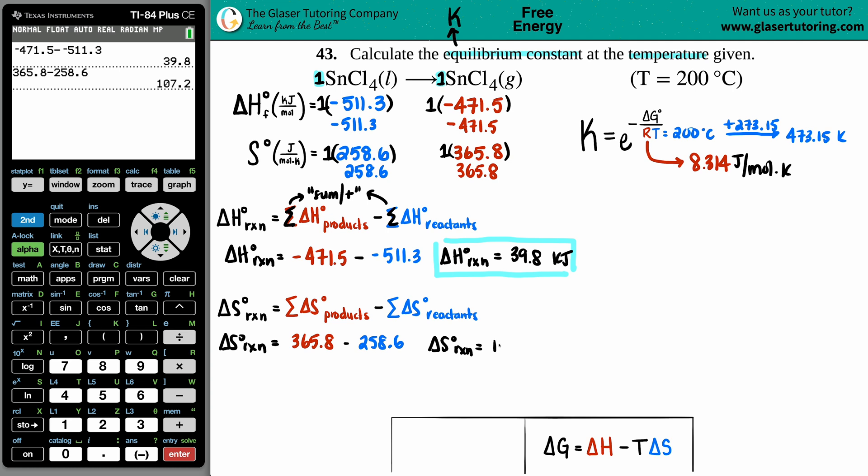Units here? Well, if we look back, it's joules per mole times kelvin. But remember we multiply these numbers by the coefficients—those are the mole values—so the mole will cancel. So it's just joule per kelvin.